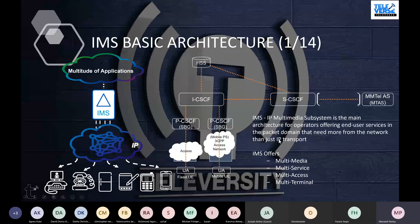Currently, what we are offering for the most part of the packet core network is just IP transport — to be able to transmit and receive packets from the Internet and then send packets to the Internet. That is what we are doing in the packet core network.